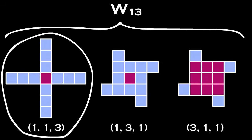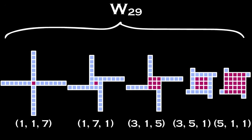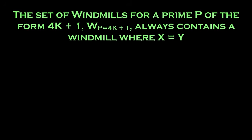That is, that the side length of the center square exactly matches the length of the rectangles. And if we consider the set of windmills for another prime, say 29, we'll see that there also exists a windmill where x equals y. In fact, there exists a windmill where x equals y for every prime of the form 4k plus 1.